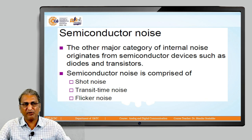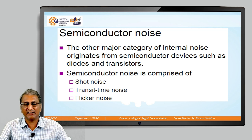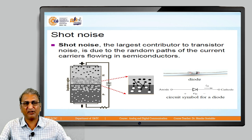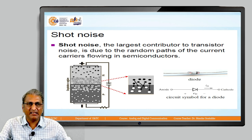Having discussed thermal noise, we now start with the second type: semiconductor noise. The other major category of internal noise originates from semiconductor devices — diodes, transistors, and FETs (field effect transistors). The noise generated in these devices is called semiconductor noise, and it is classified into shot noise, transit time noise, and flicker noise. Shot noise is the largest contributor to transistor noise and is due to random paths of current carriers flowing in semiconductors — whenever electrons move in different directions and paths, this noise is generated.